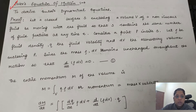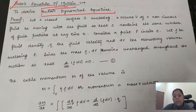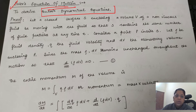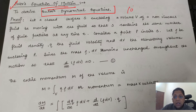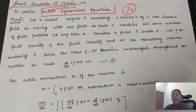Today's topic is Euler's equation of motion. We also call it the dynamical equation — Euler's dynamical equation. Usually this is worth 10 marks, so you can copy it down.